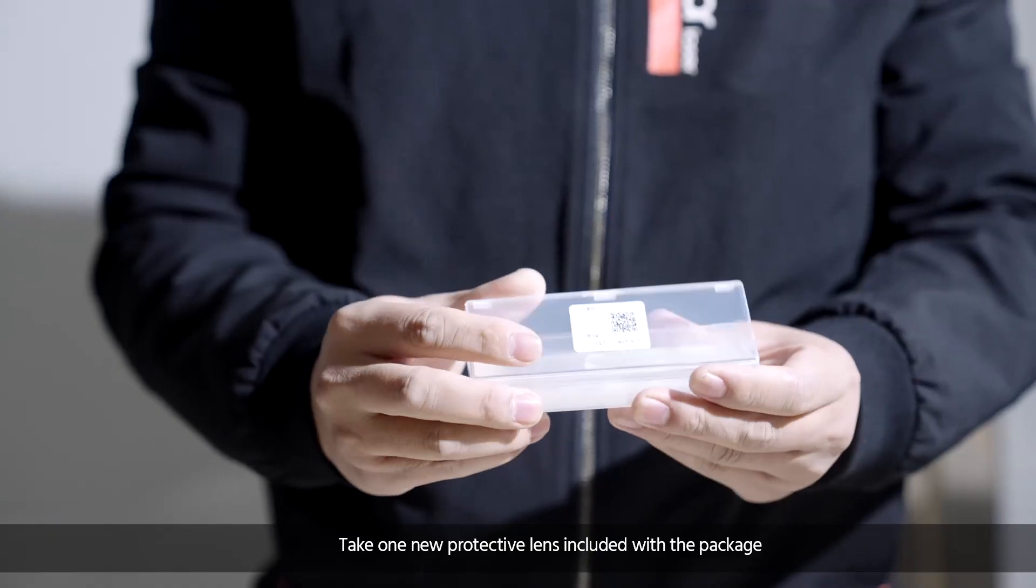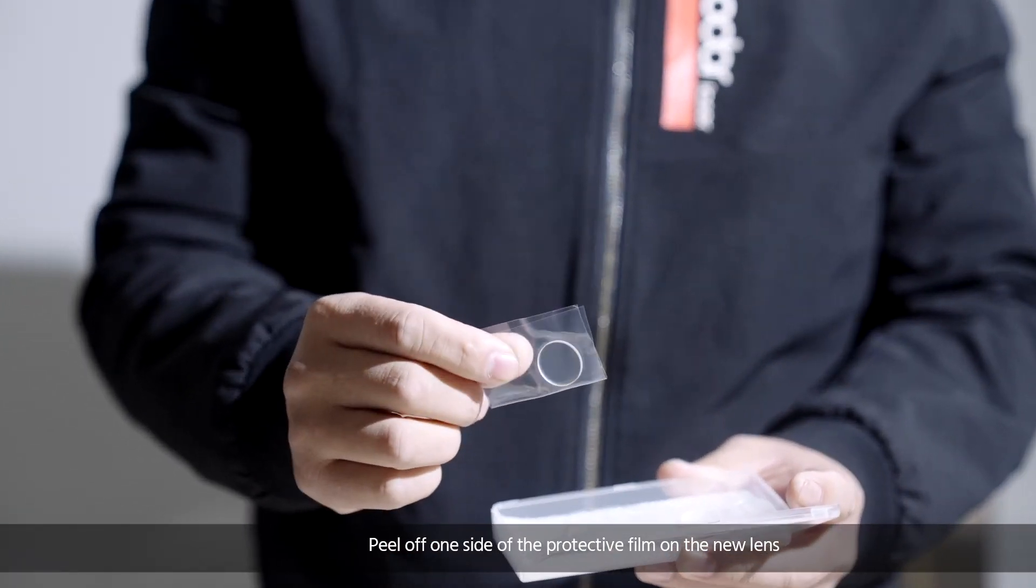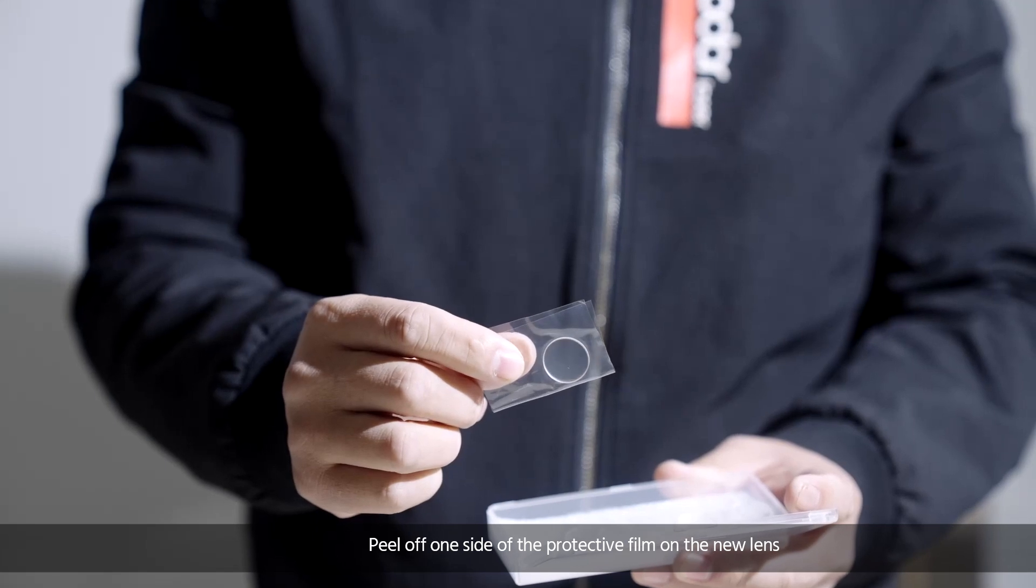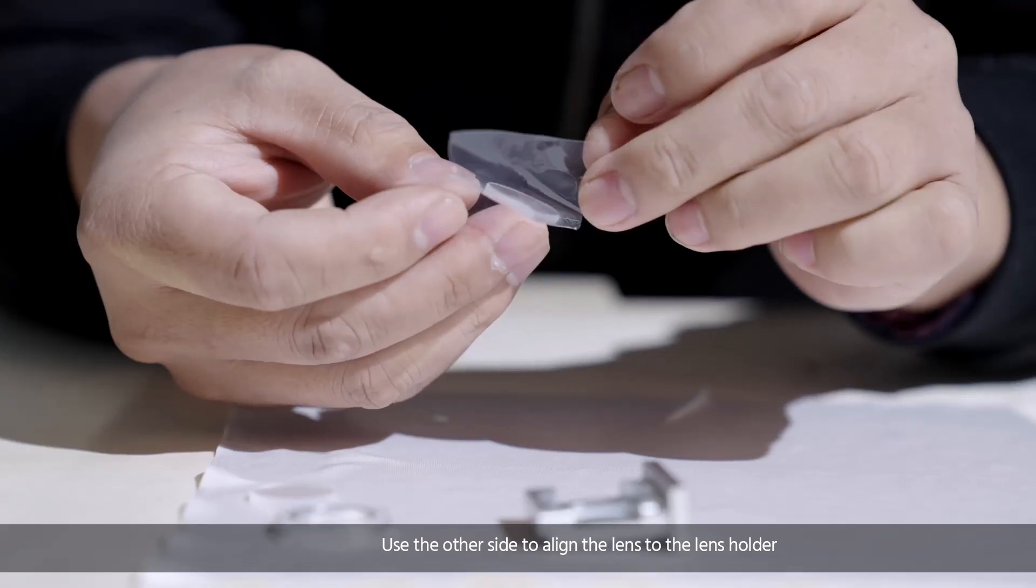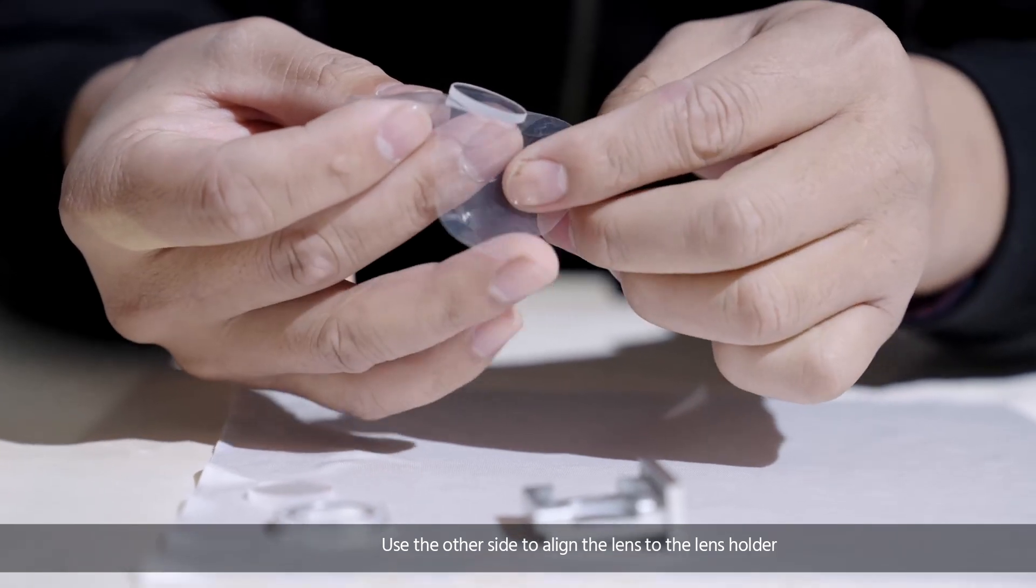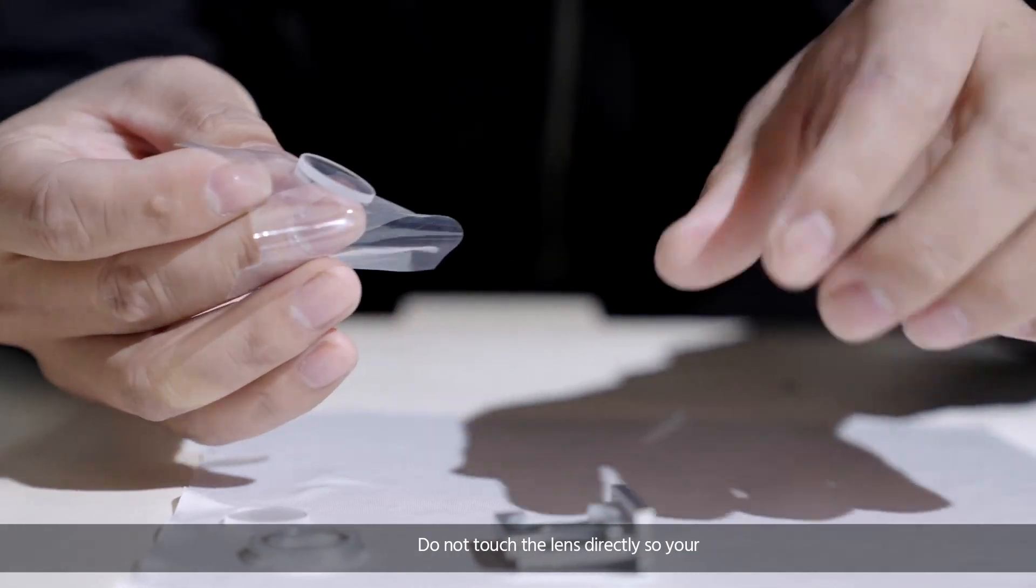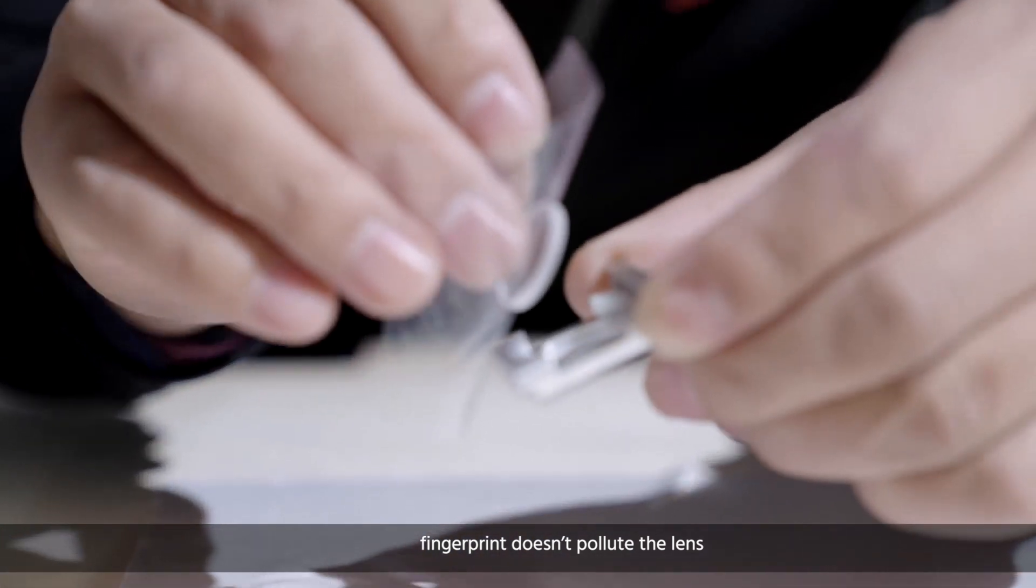Take one new protective lens included with the package. Peel off one side of the protective film on the new lens. Use the other side to align the lens to the lens holder. Do not touch the lens directly so your fingerprint doesn't pollute the lens.